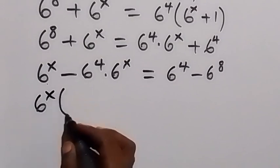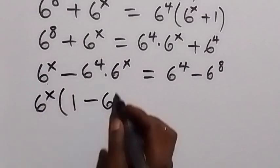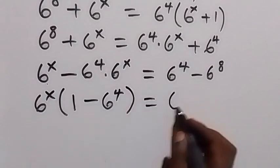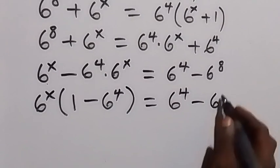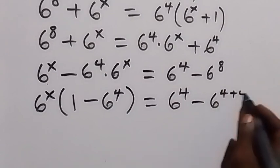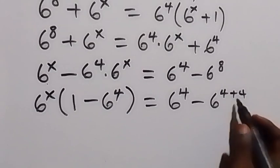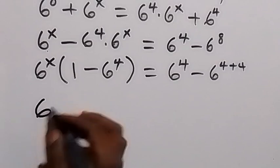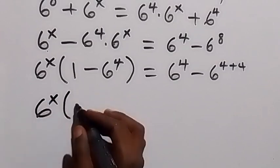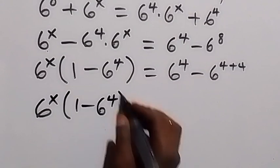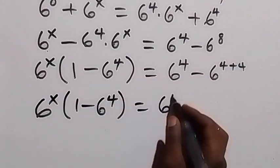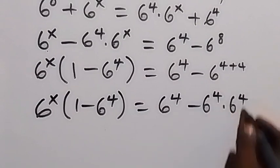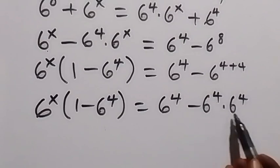We factor 6 raised to power x out from the left side, giving 6 raised to power x times bracket 1 minus 6 raised to power 4. On the right side, we write 6 raised to power 8 as 6 raised to power 4 plus 4, so the right side becomes 6 raised to power 4 minus 6 raised to power 4 times 6 raised to power 4, using the law of indices.